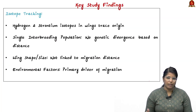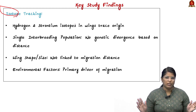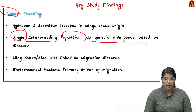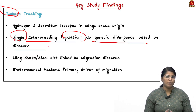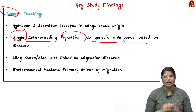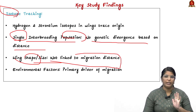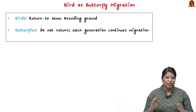Other scientific findings of the report: first, using isotope tracing — the wings have specific isotopes based on their place of origin, allowing researchers to identify where each butterfly originated. They found a single interbreeding population with no genetic diversity based on distance. Unlike birds, butterflies show no genetic variation regardless of migration distance, though some are short-traveling and others long-traveling while sharing the same genes. Wing shape and size also do not differ based on migration distance. Environmental factors are the primary driver of migration.